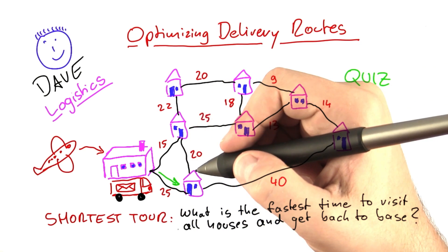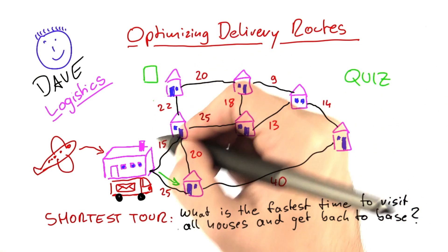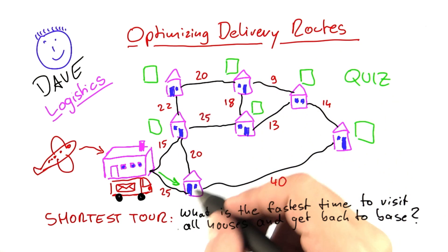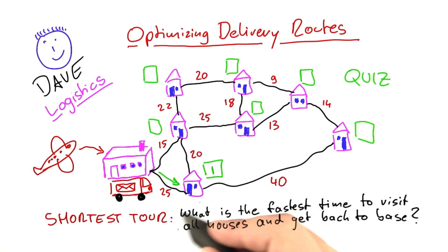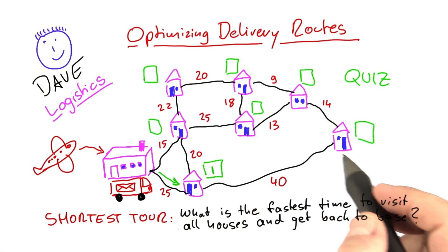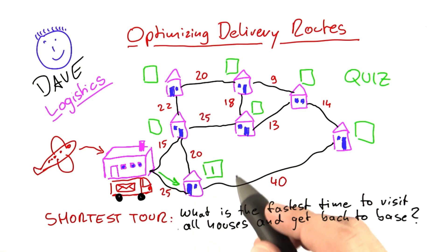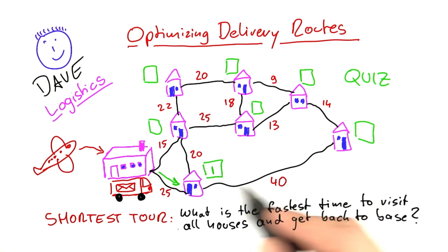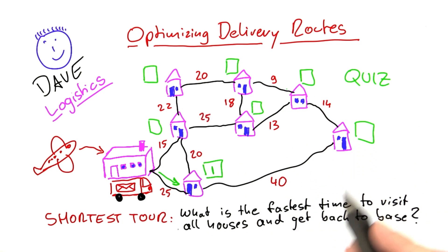What I would like you to tell me is in which order the truck should visit the other houses. This is the first house the truck is visiting, and I want you to enter a two, three, four, five, six, and seven. So if the truck travels from house one to house two, then to house three and so on, we want to find the fastest possible route to visit all houses.